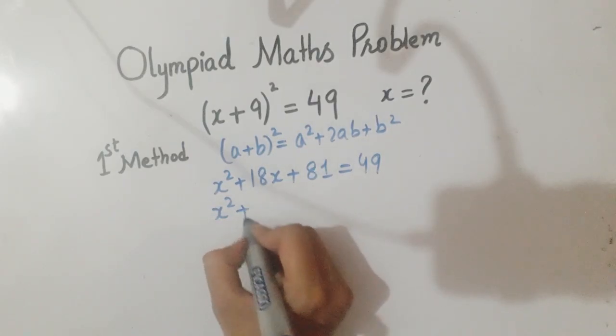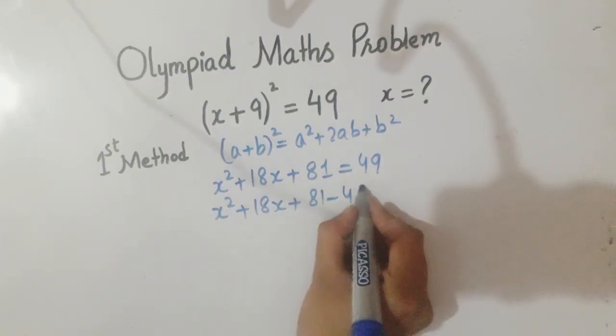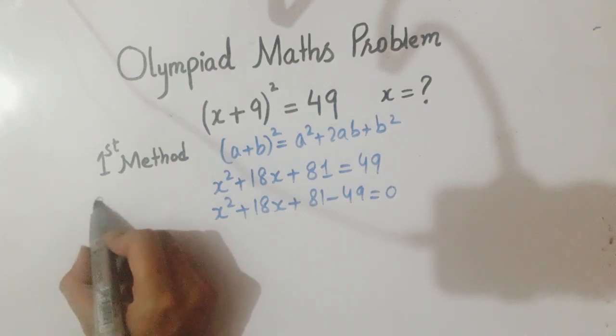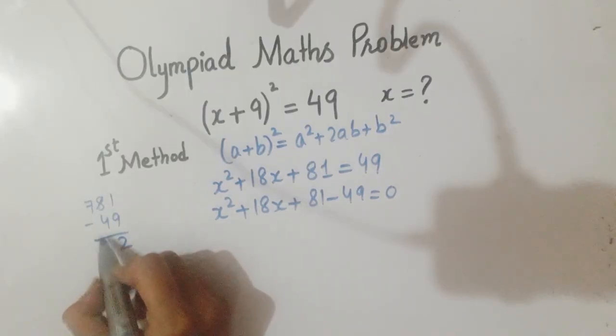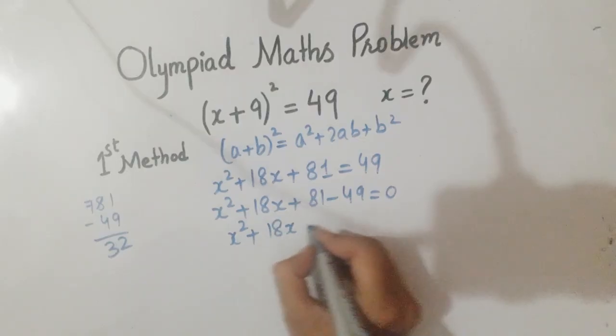So x² + 18x + 81 - 49 = 0. Now 81 - 49... we will subtract: 11 - 9 is 2, and 7 - 4 is 3. So we get x² + 18x + 32 = 0.